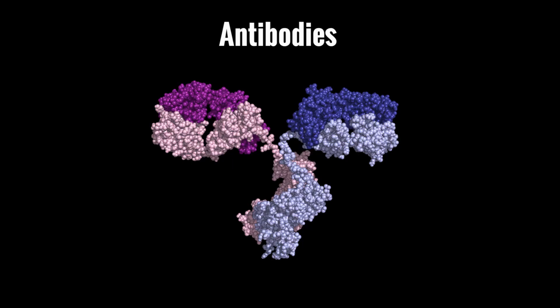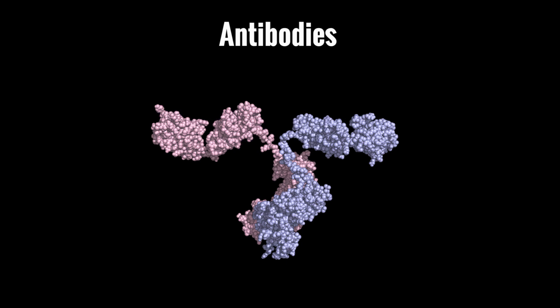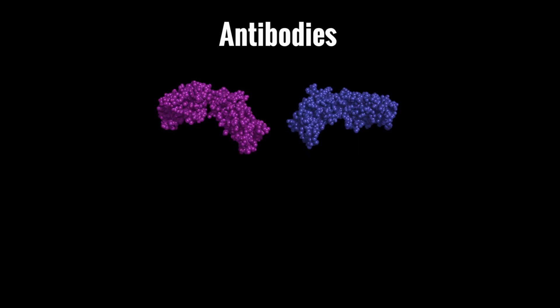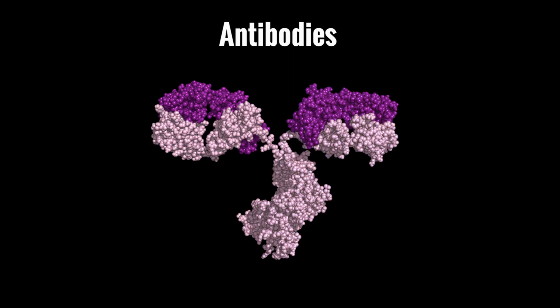Antibodies have four protein chains. Two are long and are called heavy chains. Two are short and are called light chains. The heavy chains are identical, and the light chains are identical.